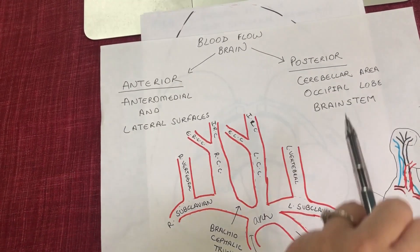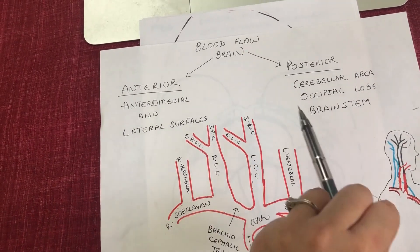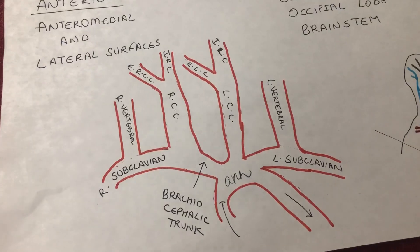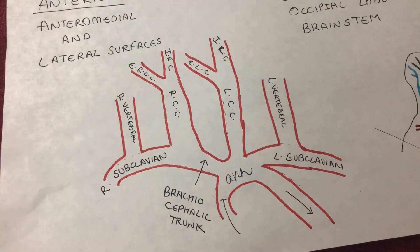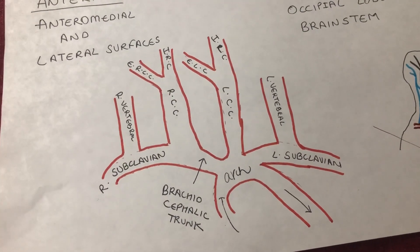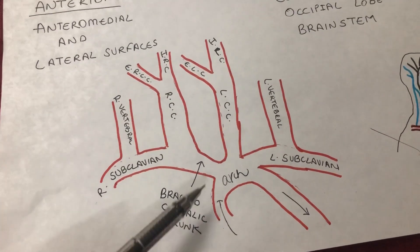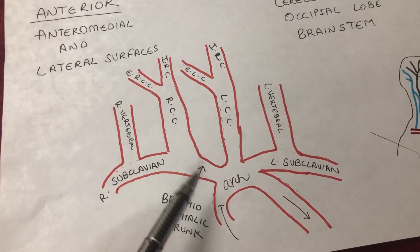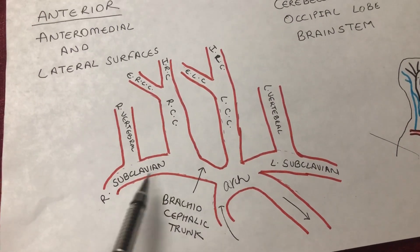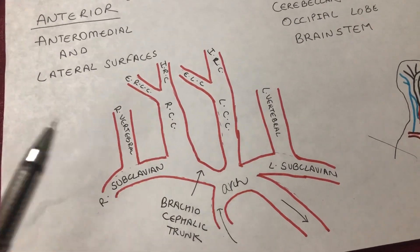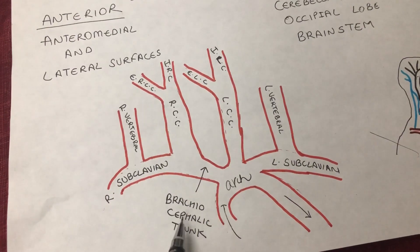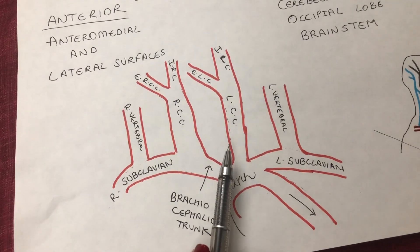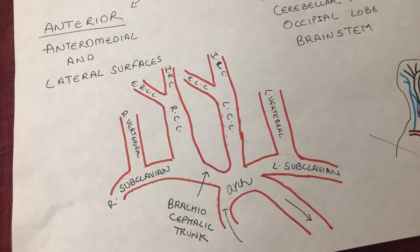Now, the arteries that supply blood to these areas all originate from the aorta. The aorta has three parts: the ascending, the arch, and the descending. The aortic arch then subdivides into three main arteries — the brachiocephalic trunk, the left common carotid, and the left subclavian.